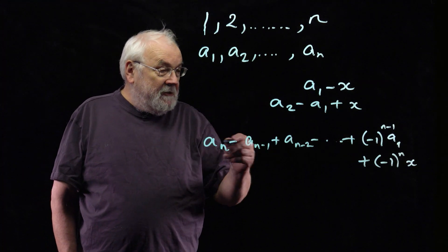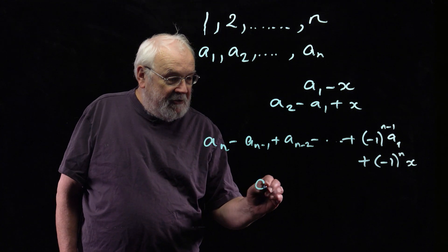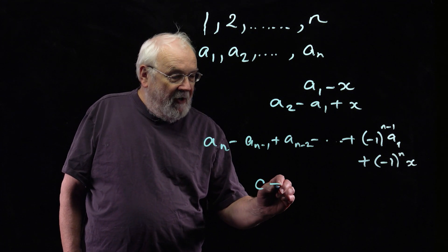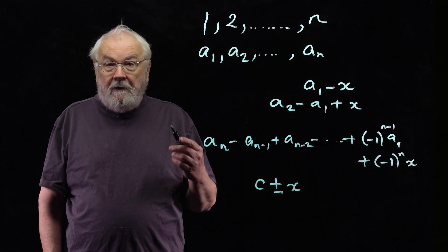Now all these numbers, just with alternating signs, they're producing just a constant. And then you've either got plus or minus x when you've done that.